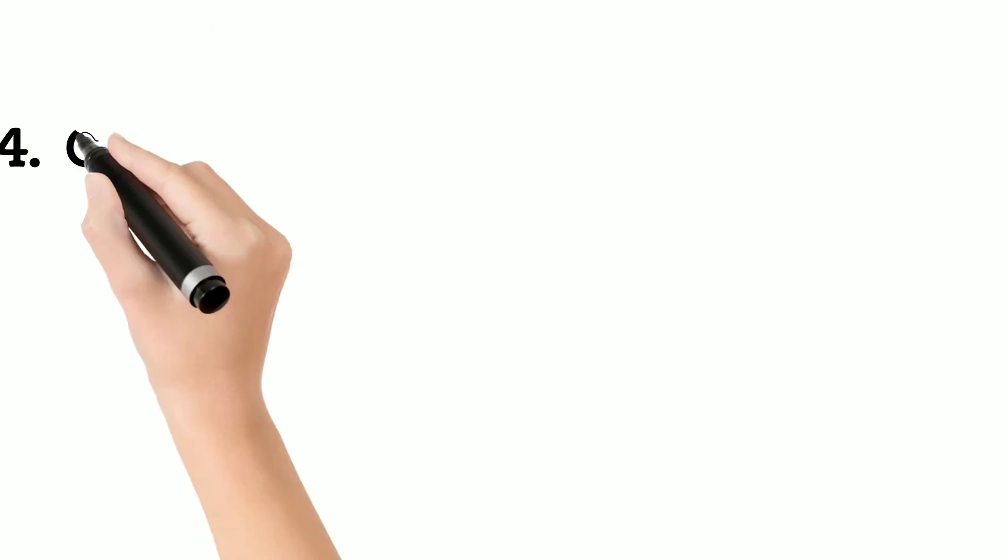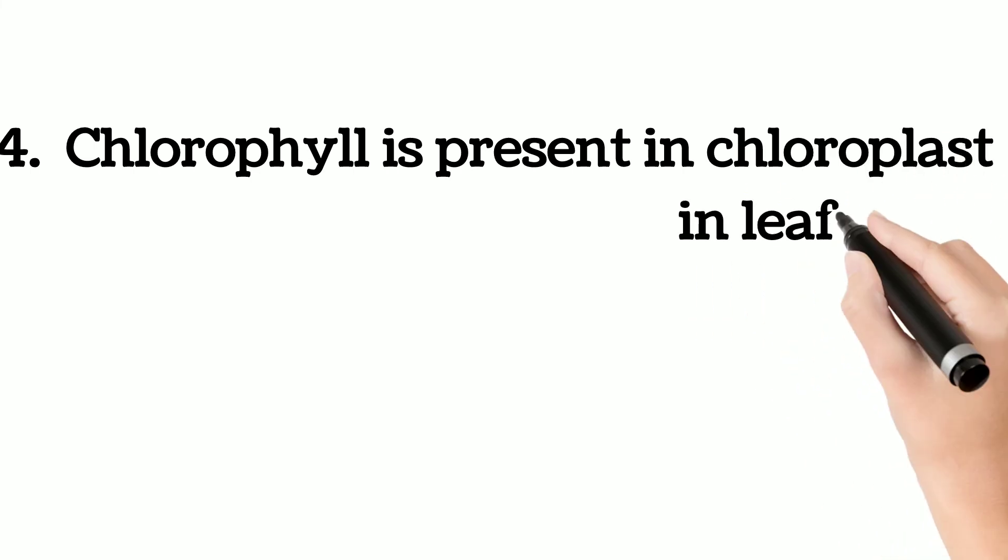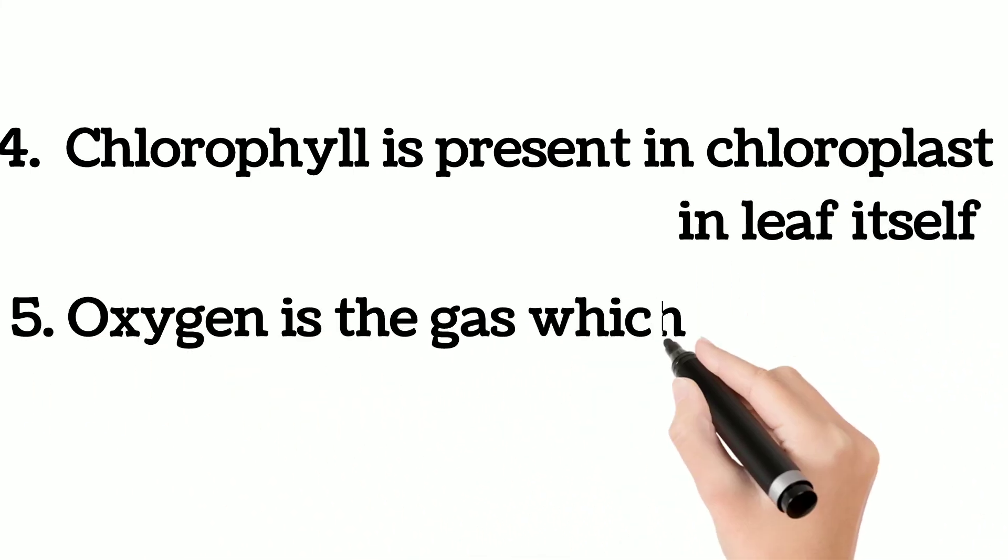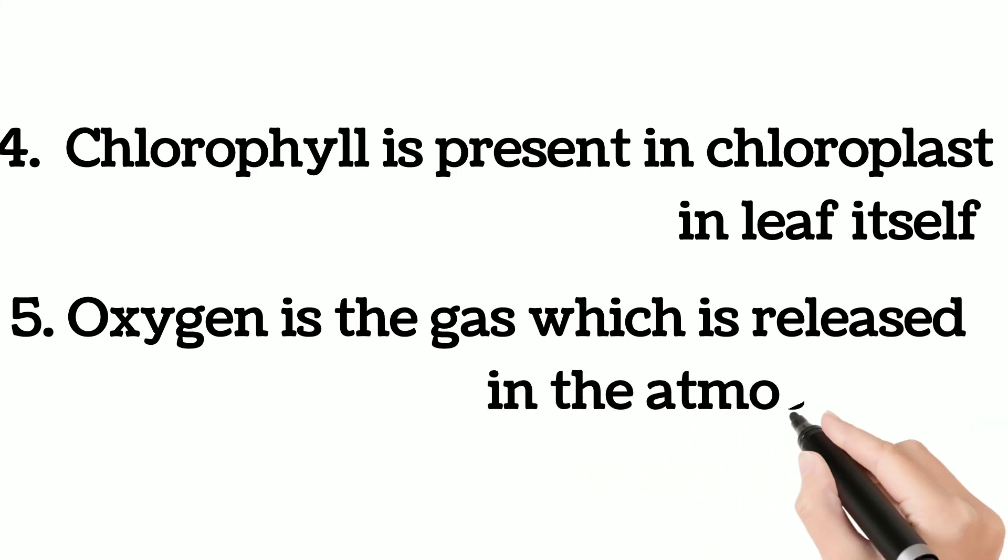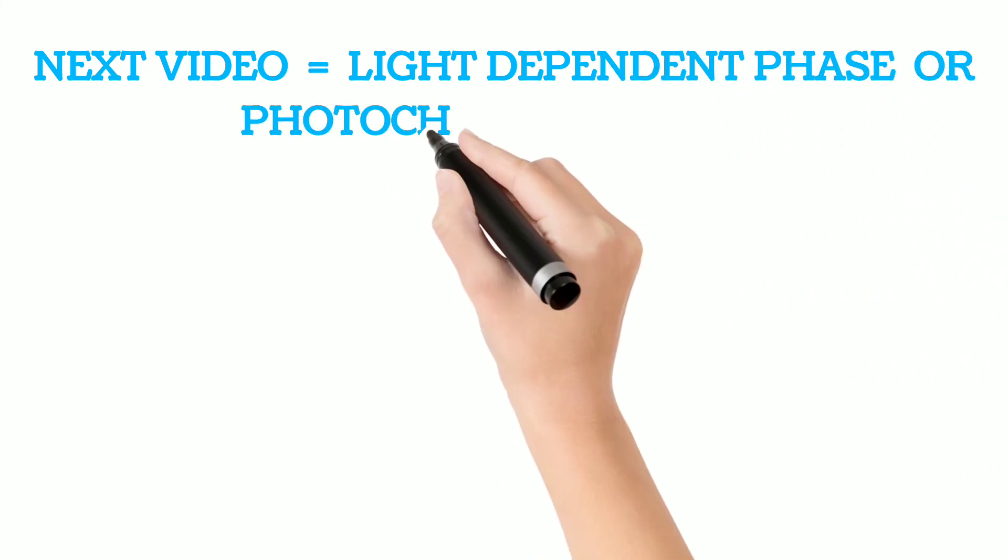Number four: chlorophyll is present in chloroplasts in the leaf itself. Number five: oxygen is the gas which is released into the atmosphere. So our next topic will be light dependent or photochemical reactions